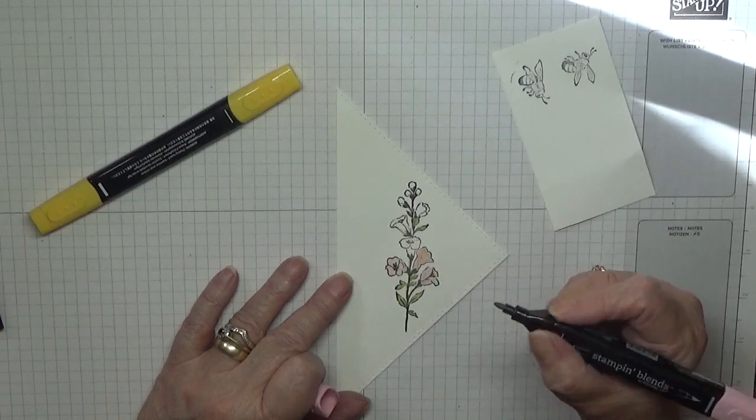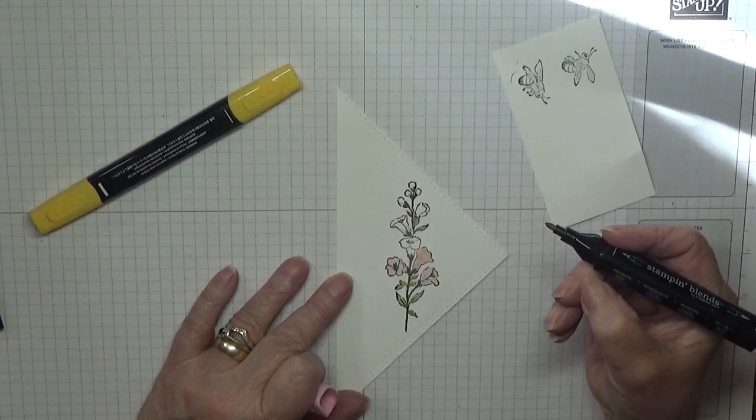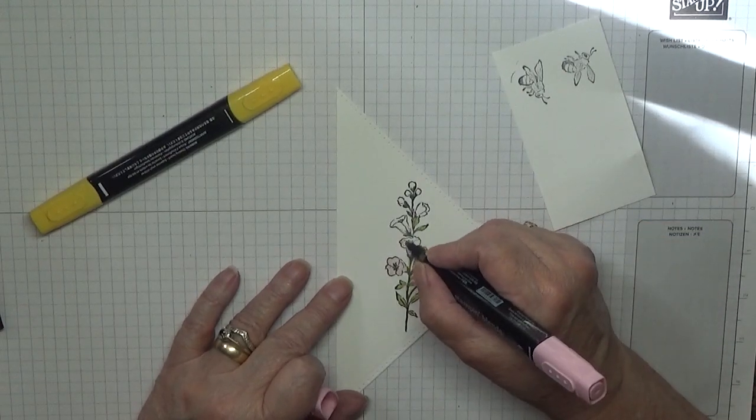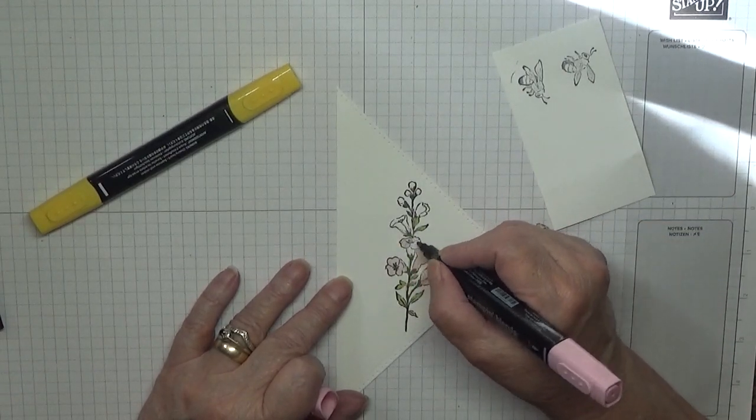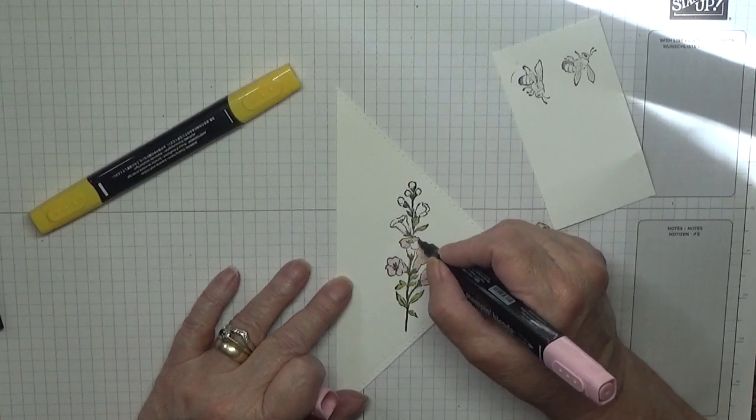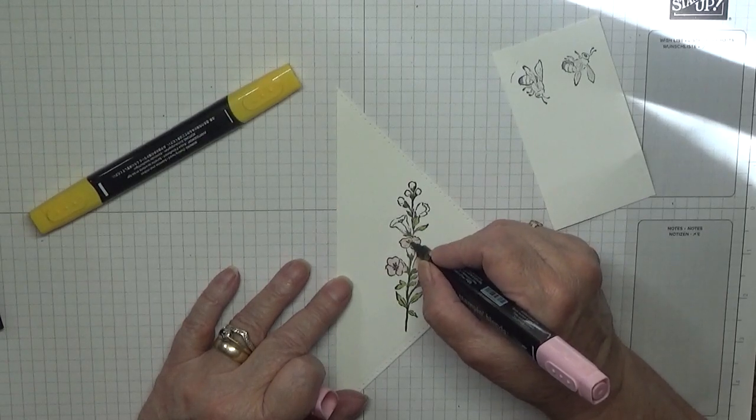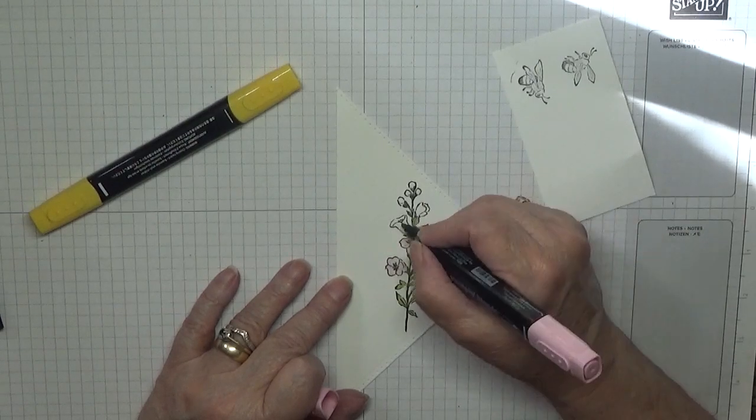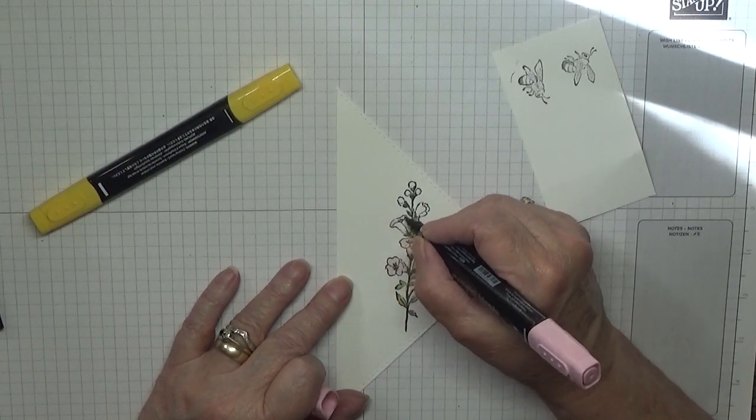This should have been a Pink Pirouette, I think. I didn't have a reinker for Pink Pirouette, so we used Blushing Bride.